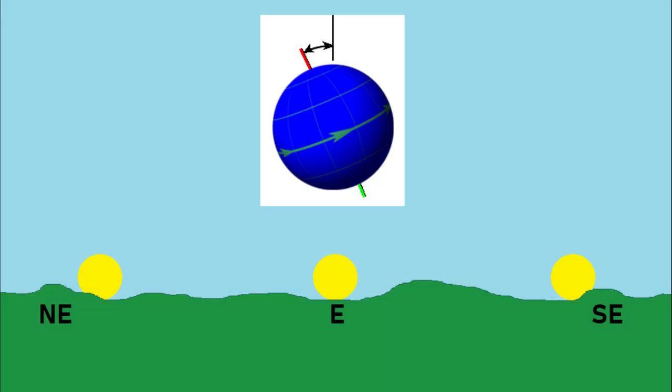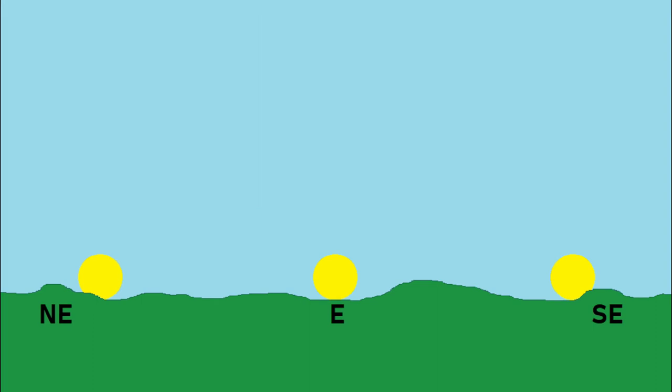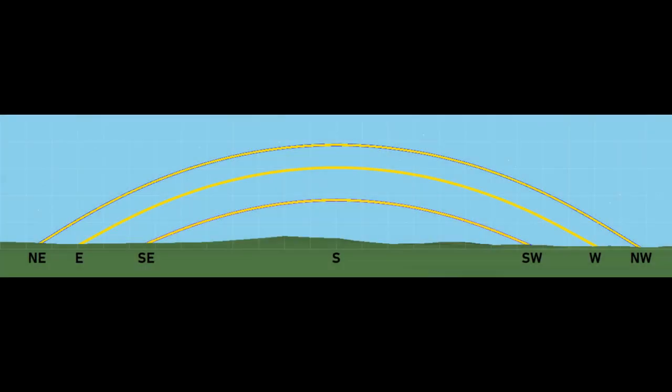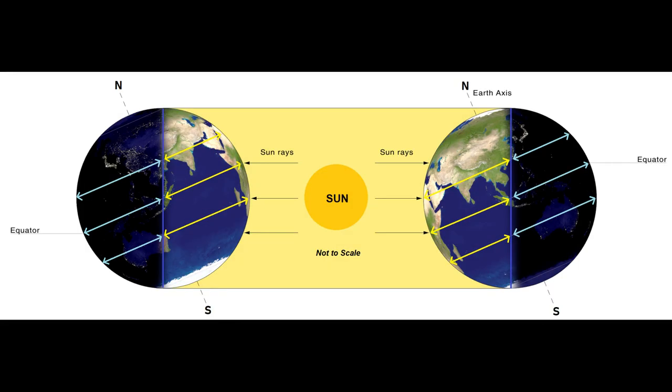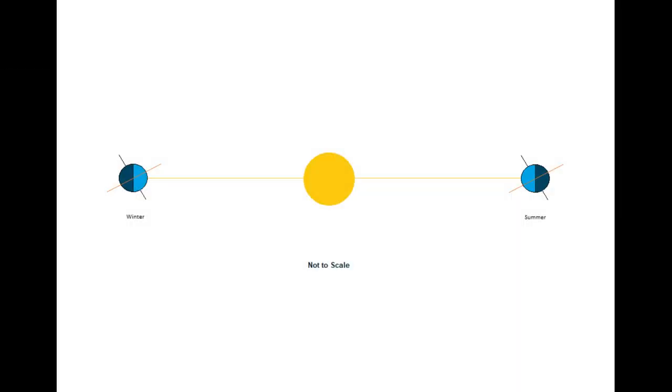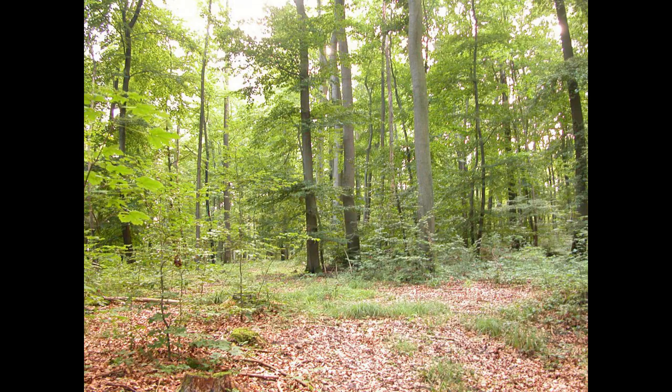Axial tilt, however, makes the Sun seem to rise and set further north or south, either higher or lower in the sky. This causes fluctuation in the intensity and amount of sunlight across different parts of the Earth over the course of a year, in turn driving seasonal changes in many environments.